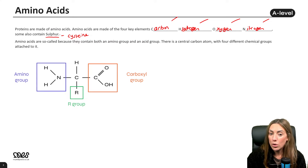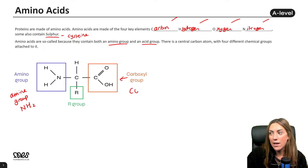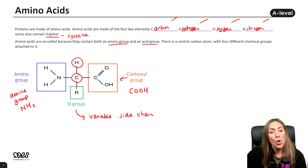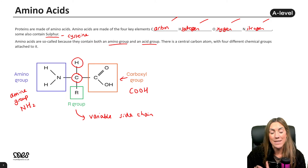Amino acids are called amino acids because they contain an amino group and an acidic group. On the diagram, we have the amino group — sometimes called the amine group — which is the NH₂ group. We have the carboxyl group, which is the COOH group. We have the central carbon in the middle with a hydrogen coming off it, and the R group. The R group represents the variable side chain — all different amino acids have a different R group.